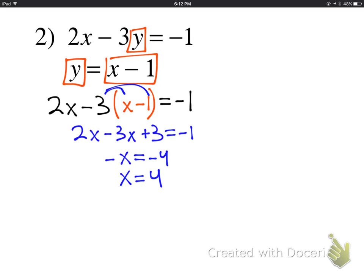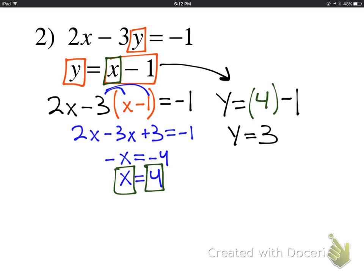Once again, I'm going to plug this back in, this 4, for x up there. And the easier equation to use would be the one where y is already by itself. So I'm going to use that equation. Instead of x, I'm going to put a 4. And 4 minus 1 is 3. So our solution is 4 comma 3.